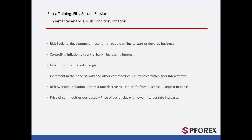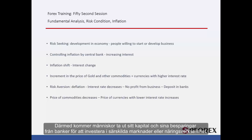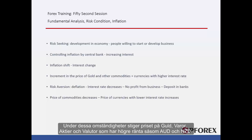Risk Seeking: Economic growth and a low unemployment rate create a risk-seeking condition, where people withdraw their capital from banks to invest in a certain market or business. The central bank should raise interest rates to keep inflation at a rational amount, and the rate of interest changes whenever inflation varies. In this condition, there is an increase in the price of gold, commodities, stocks, and currencies with higher interest rates, such as the Australian dollar or New Zealand dollar.